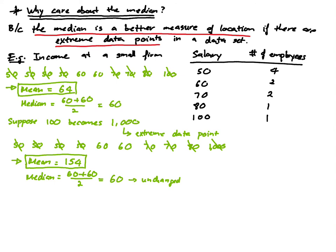So in this video, we talked about the median, how to find the median, and we did an example showing that when you have extreme data points in the data set, the median is a better measure of location than the mean, because the mean can be easily changed by those data points.